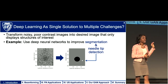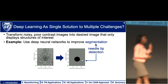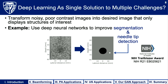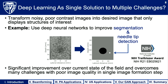Combining different networks and allowing multiple outputs from a single step — this concept is the topic of my recently funded Trailblazer Award from the NIH. At the time I proposed this concept and received this award, no one was thinking in this direction. Successful implementation of this proposed approach would offer significant improvements over the current state of the field and overcome many of the challenges with poor image quality in a single image formation step.